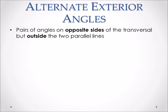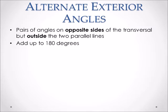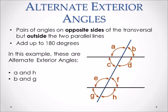Alternate exterior angles are pairs of angles on the opposite sides of the transversal, but they are outside of the two parallel lines. They also add up to 180 degrees. Using the same diagram as before, the alternate exterior angles are A and H, as well as B and G.